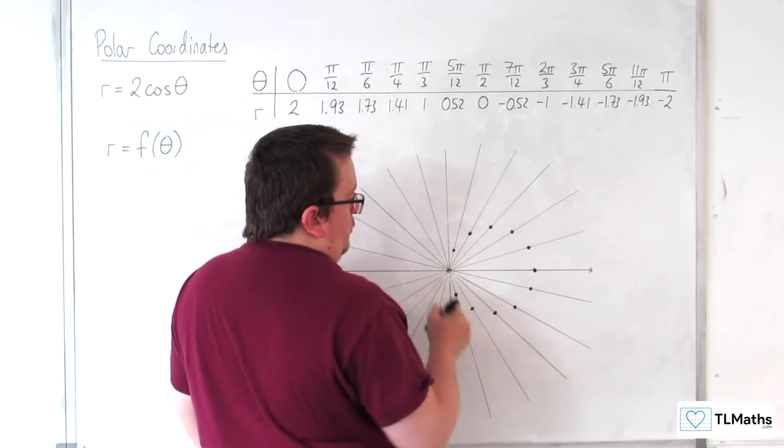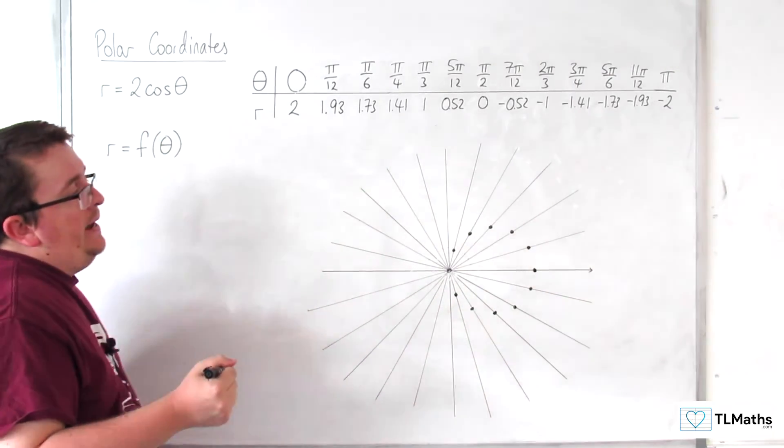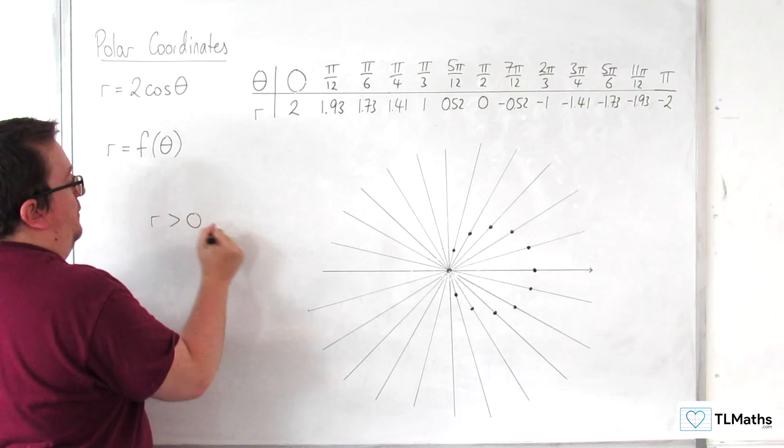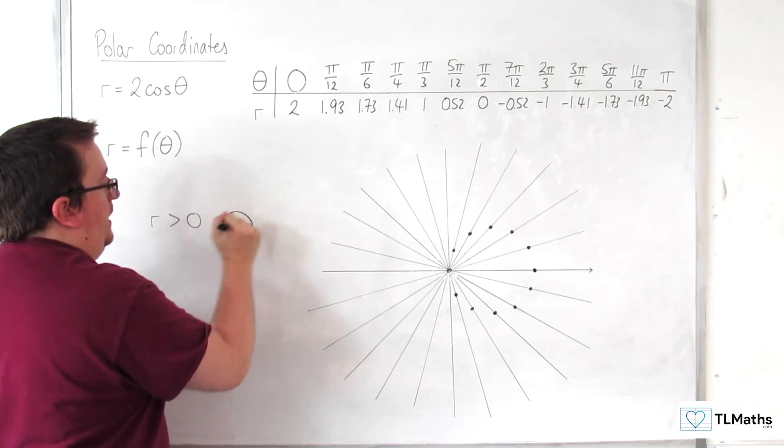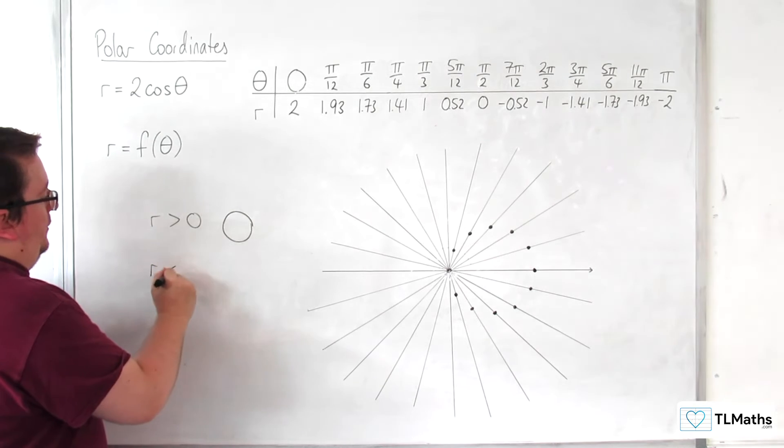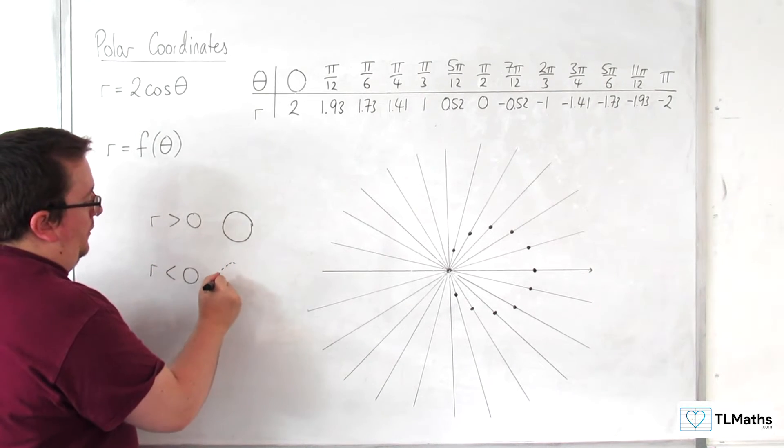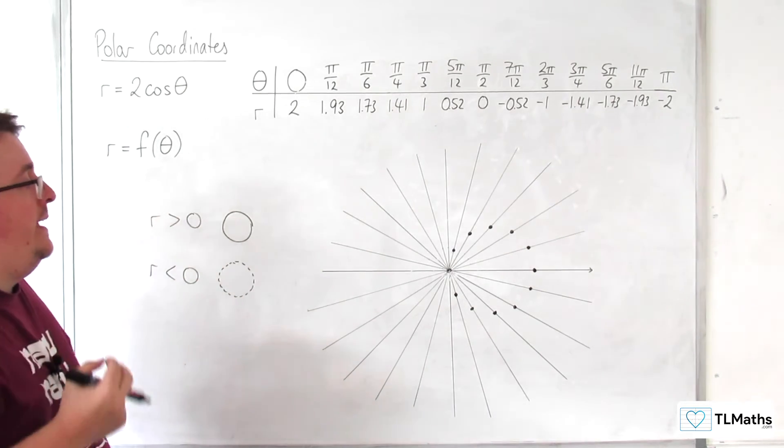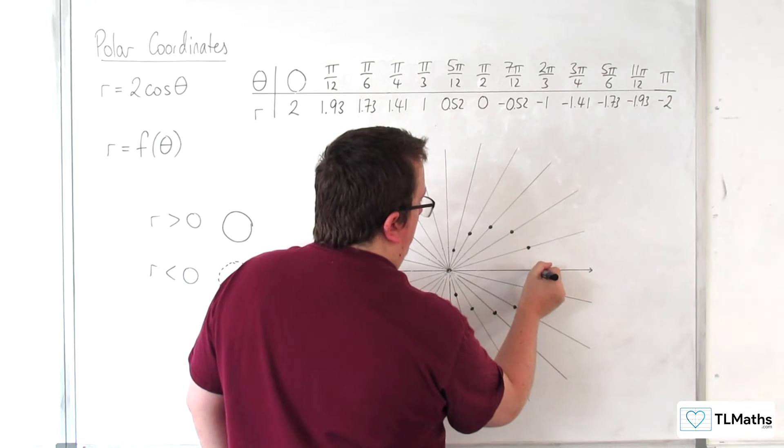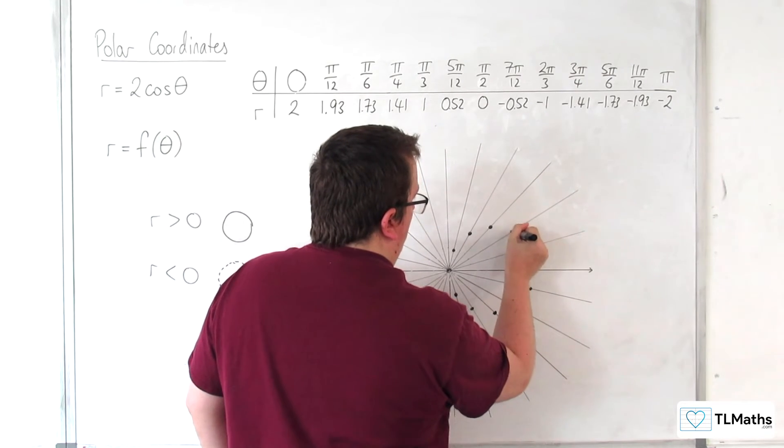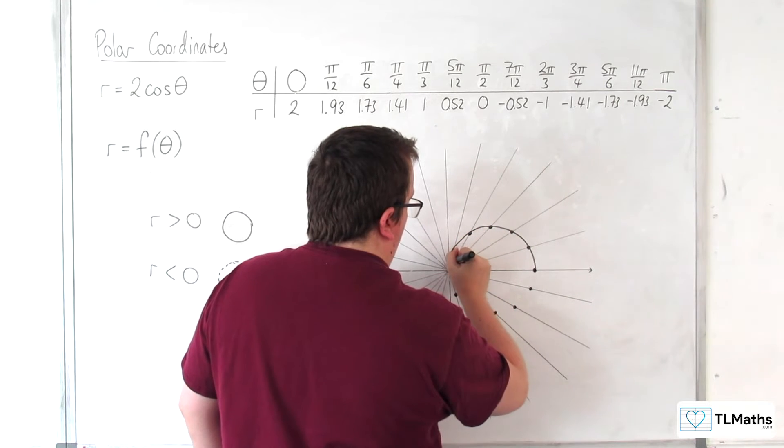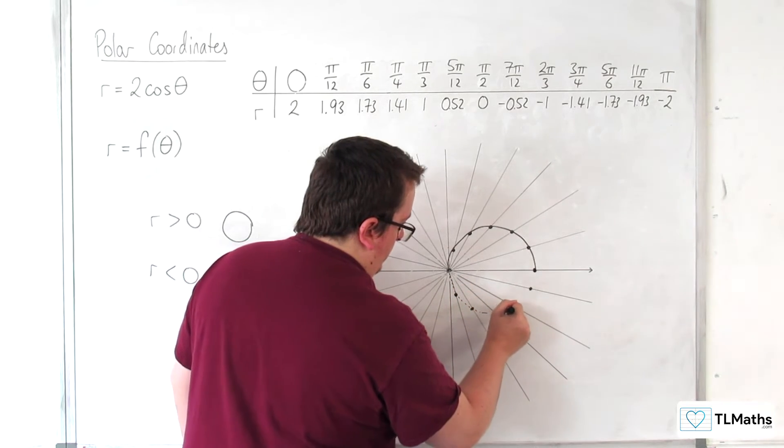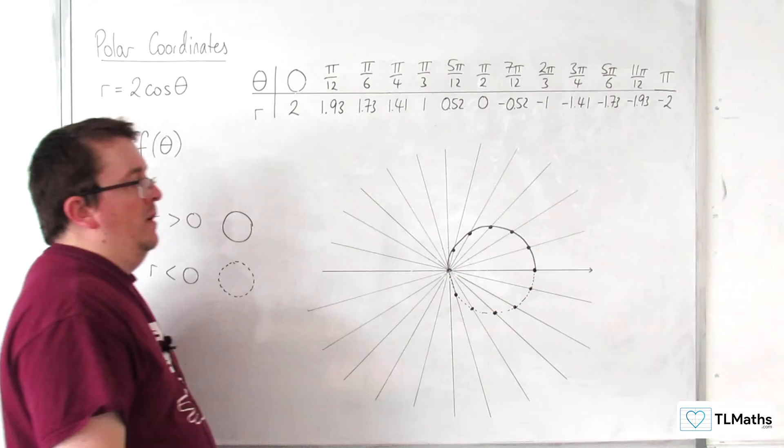So if I now join these up, the convention that we use is that if r is positive, then we use a solid curve. And when r is less than 0, when it's negative, we use a dotted curve. That is the convention that is often used. So actually it starts off solid, like that. And then it's dotted for that part of the graph.